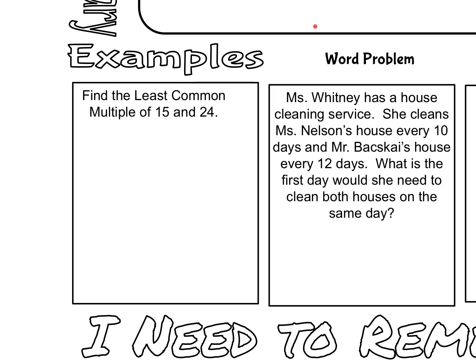Let's look at an example. We want to find the least common multiple of 15 and 24. The easiest and most straightforward way to find the least common multiple is to simply make a list of our multiples. I'm going to start with the numbers 15 and 24 and find multiples of each until I find one they have in common. You can use a multiplication table, a calculator, or just skip count.